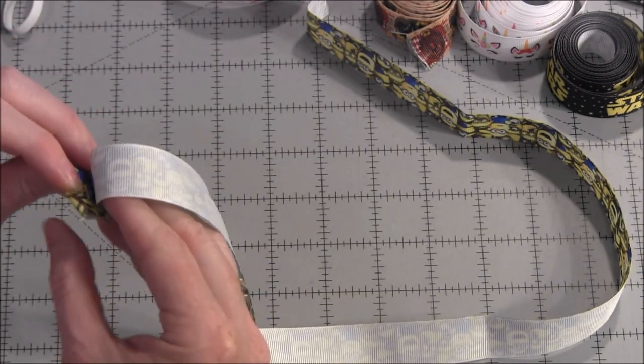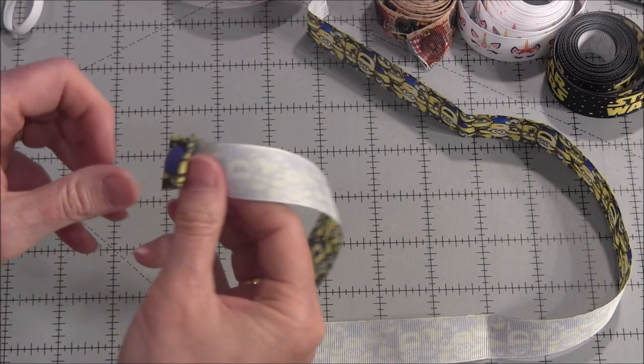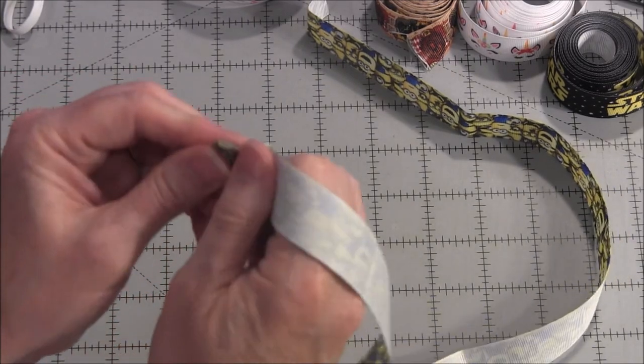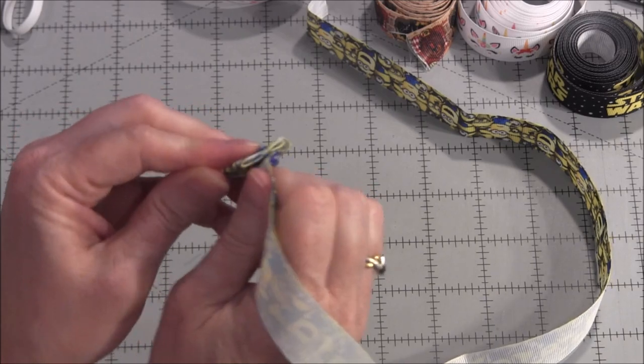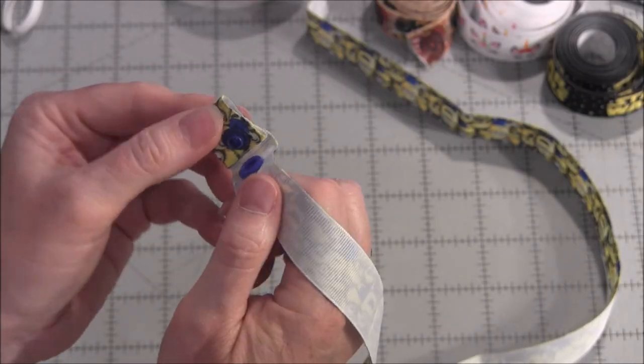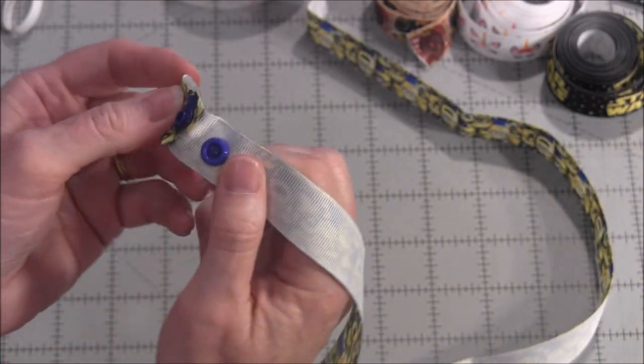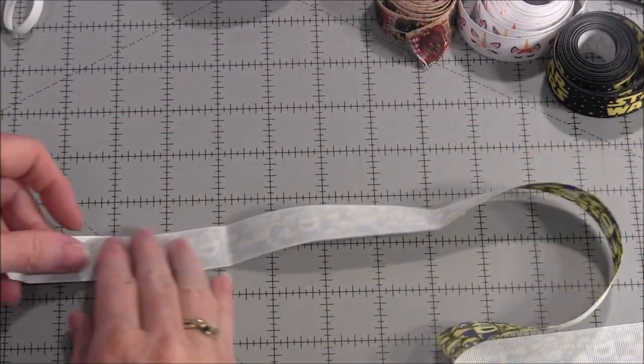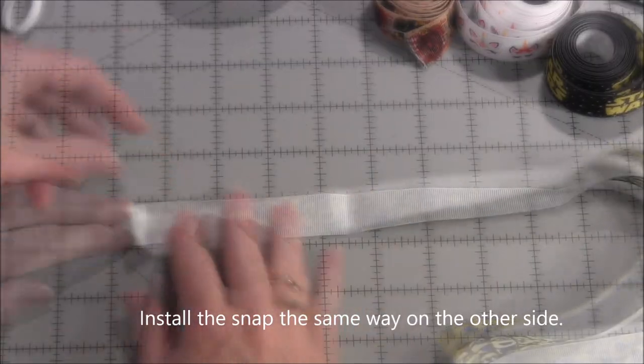So that's one side completed. I always test my cam snaps two or three times when I put them on to make sure they don't come apart. Once in a while you find one that will come apart, so that's half of it done already. Let's do the other half.